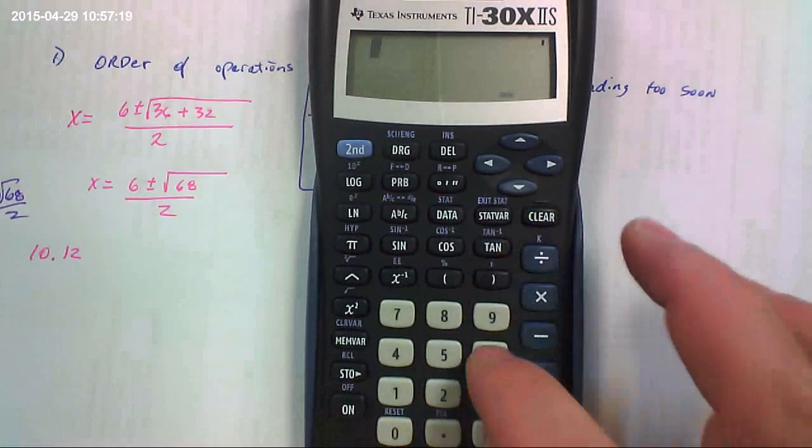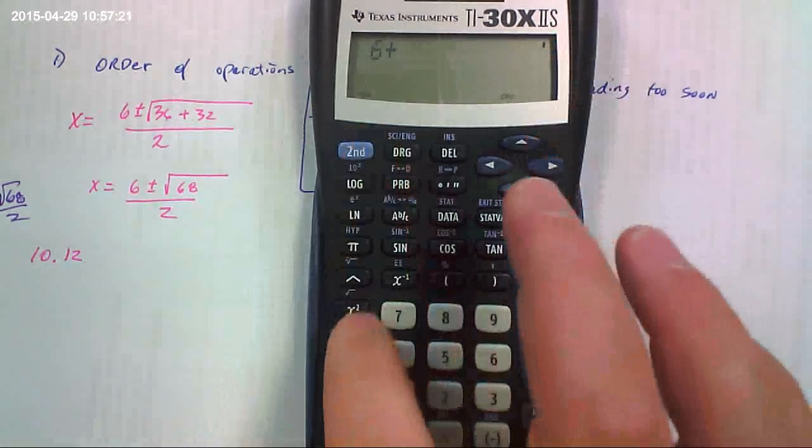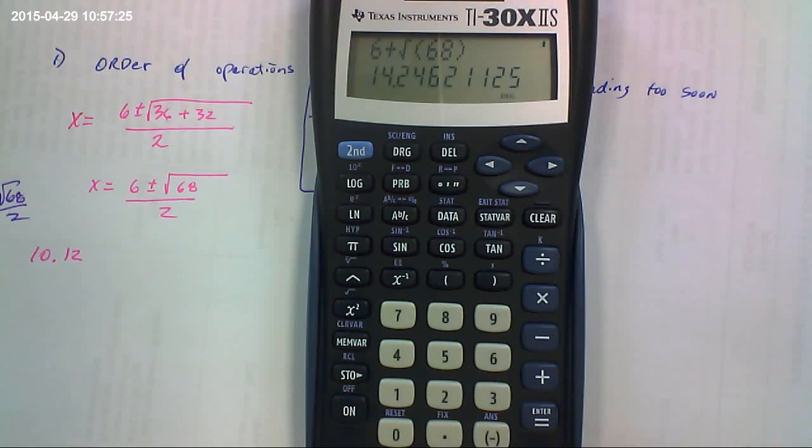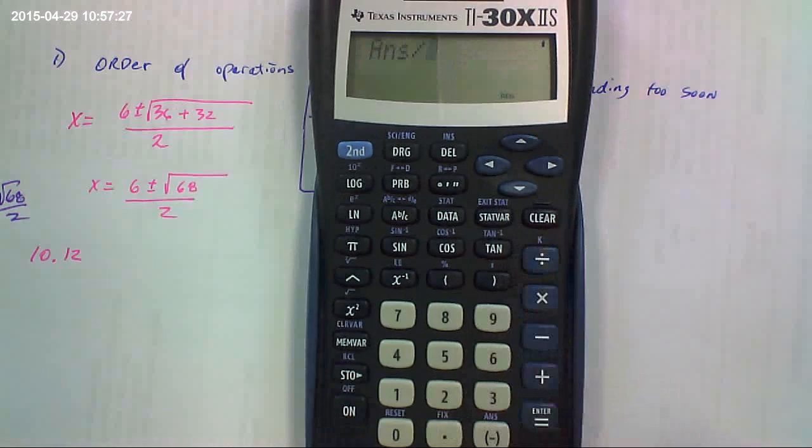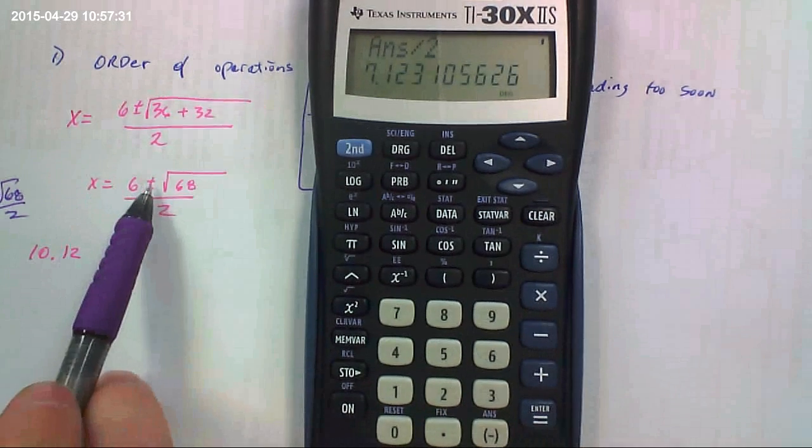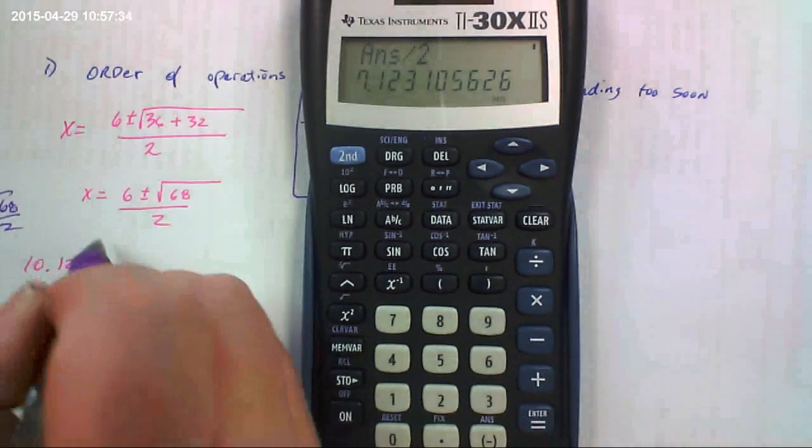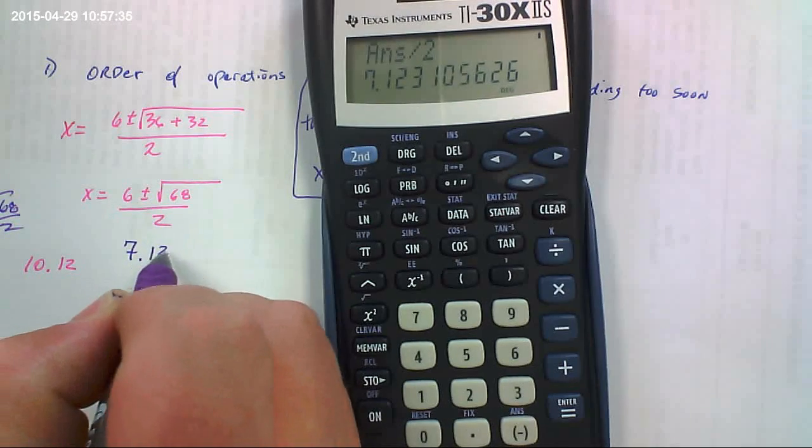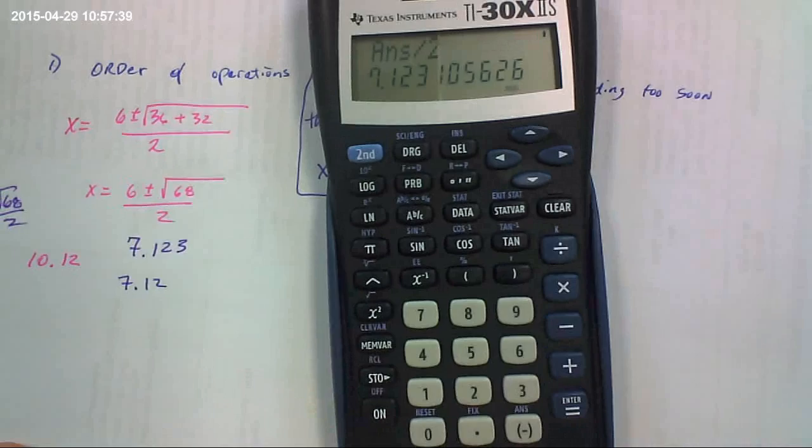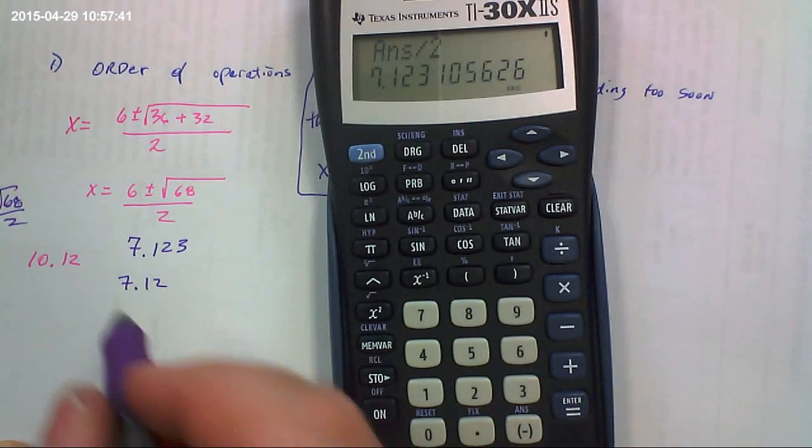Here's one method. Instead, you could say 6 plus the square root of 68 equals, and then take your answer, divide that by 2. Because then it does this calculation in the numerator first. To the second decimal place that would be 7.12. So that's one answer.